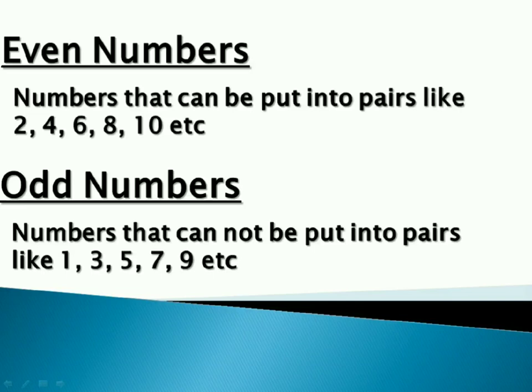And the same way, odd numbers have 1, 3, 5, 7 or 9 on units place. And as seen earlier, even numbers can be put into pairs, and odd numbers cannot be put into pairs.